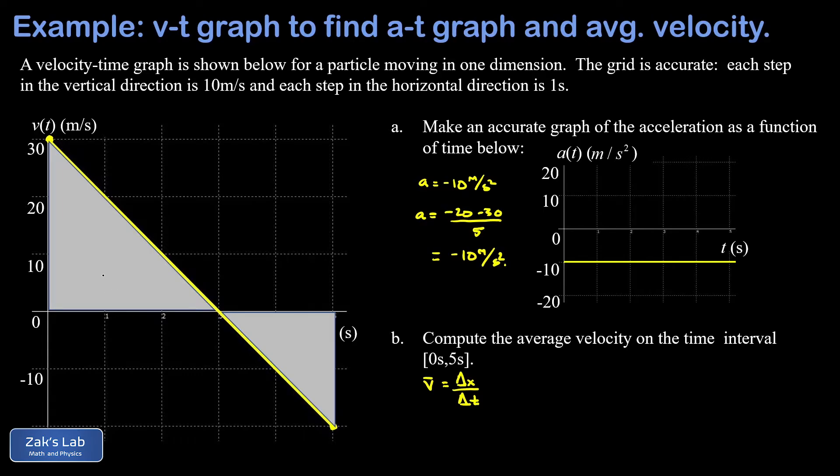Both of these are triangles, so we can use geometry formulas to get the area contributions. I have to remember that above the t-axis, the area counts as positive. I'm going to call this A1. That's the displacement for the first part of the motion. The area is one-half base times height. So I have one-half, and then the base is three seconds, and the height is 30 meters per second.